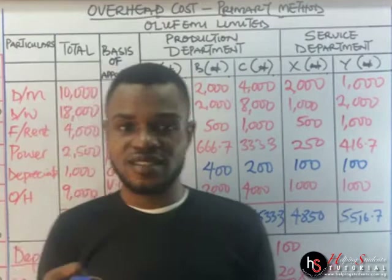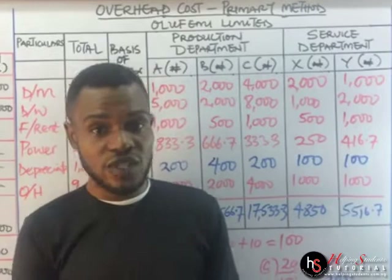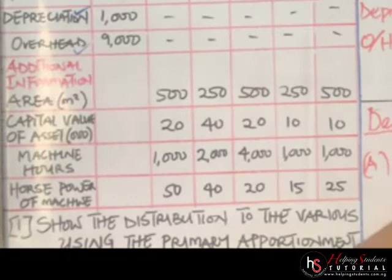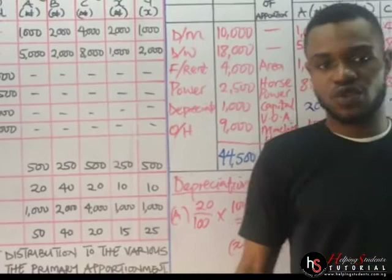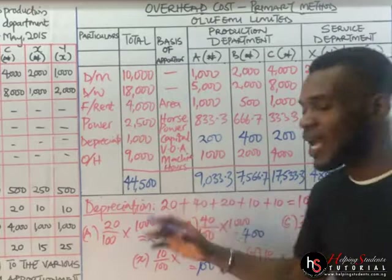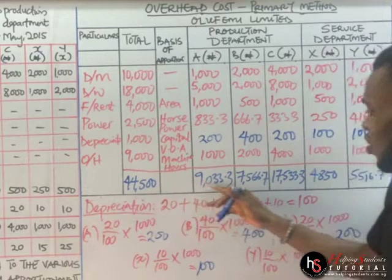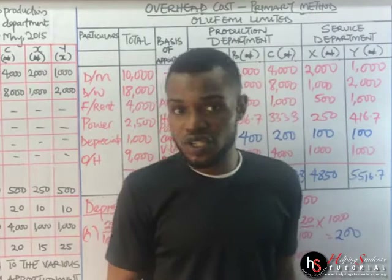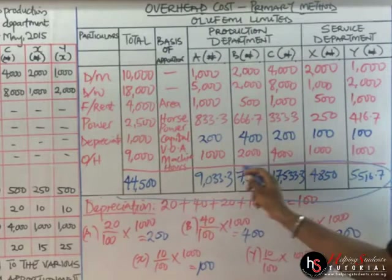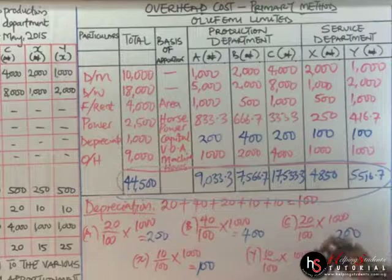This is the correct method to answer any question under the primary apportionment. The introductory video is very important — watch it and understand the concepts. Note that the same question may also ask you to show the redistribution for the secondary apportionment. The final total values obtained here will become the allocated cost for each department in the secondary apportionment, whether you use the simultaneous equation, algebraic, or direct method.